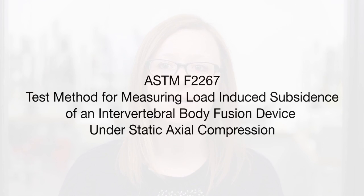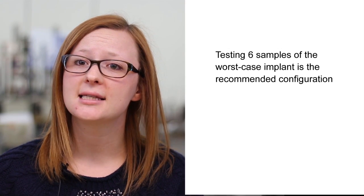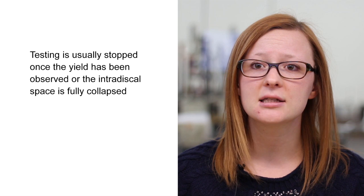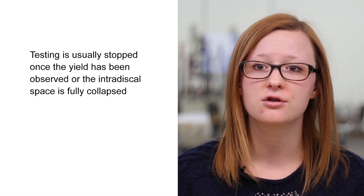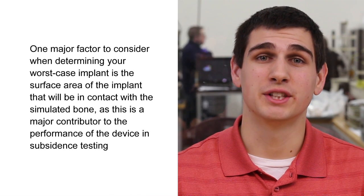The second standard in today's video, ASTM F2267, is a standard test method for measuring load-induced subsidence of an intervertebral body fusion device under static axial compression. The standard allows for comparative evaluation of different intervertebral body fusion devices, providing a basis for mechanical comparison amongst past, present, and future non-biologic intervertebral body fusion devices. Testing six samples of the worst case implant is the recommended configuration, and testing is usually stopped once yield has been observed or the intradiscal space is fully collapsed. One major factor to consider when determining a worst case device is the surface area of the implant in contact with the bone surface, as this is a major contributor in performance during subsidence testing.